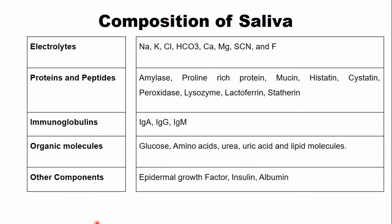The electrolytes mainly present in human saliva include sodium, potassium, chloride, bicarbonate, calcium, magnesium, thiocyanate, and fluoride.